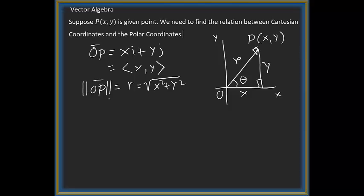You can see that sin theta is y over r, and cosine theta is x over r, because sin theta is opposite over hypotenuse. From these, you can say y equals r sin theta, and x equals r cosine theta.